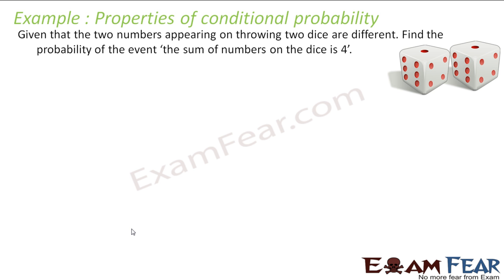Given the two numbers appearing on a throw of two dice are different, find the probability of the event where the sum of the numbers on the die is 4. So it is given that the numbers appearing are different. The total number of options will be 6 into 6, that is 36. Out of 36, we know there are 6 where the numbers will be the same — (1,1), (2,2), (3,3), (4,4), (5,5), (6,6).